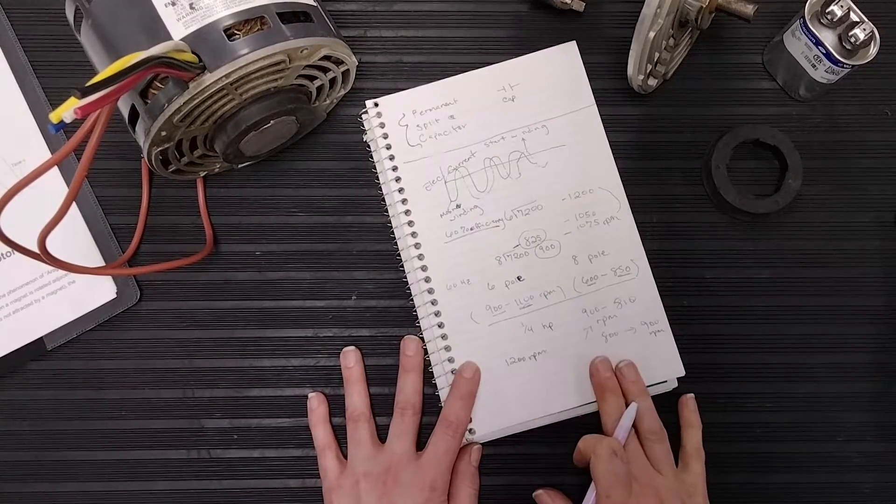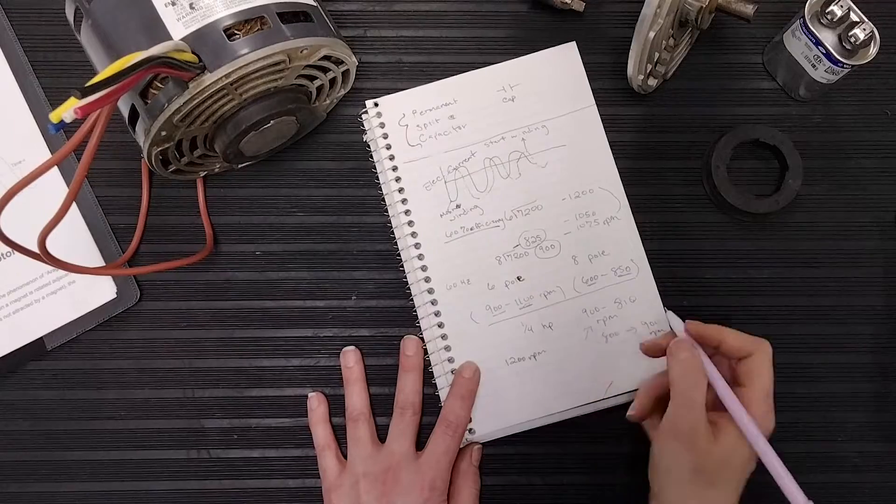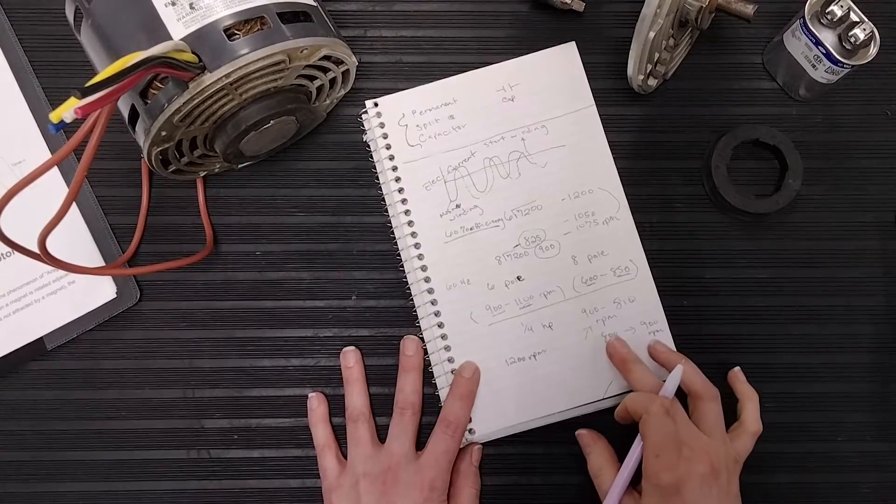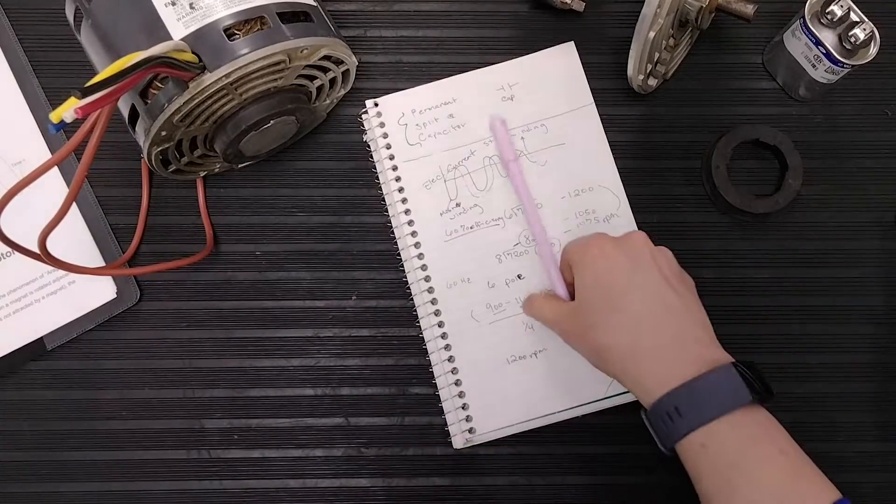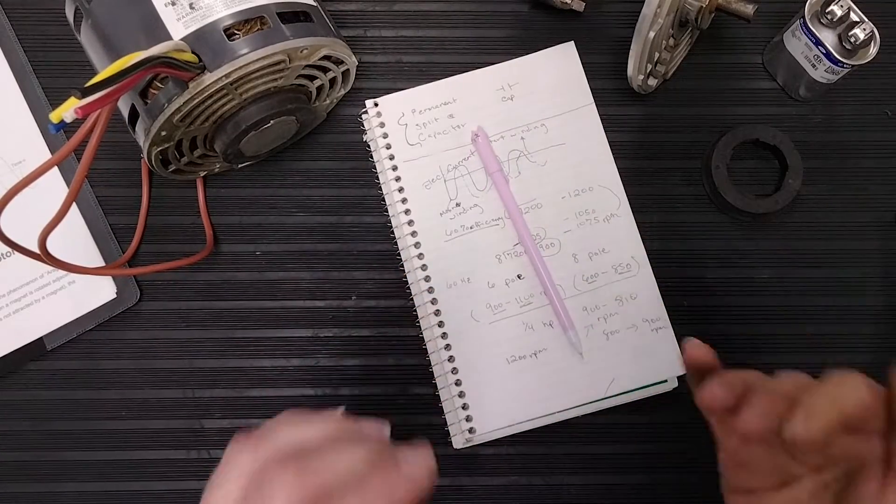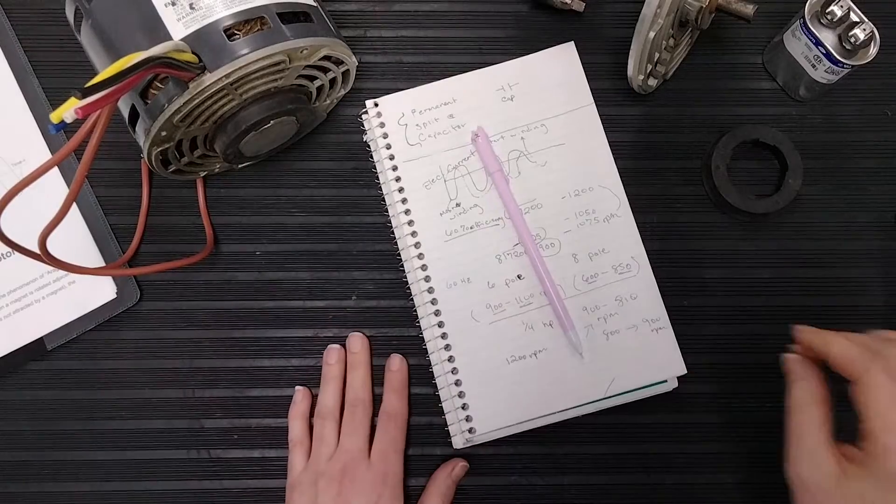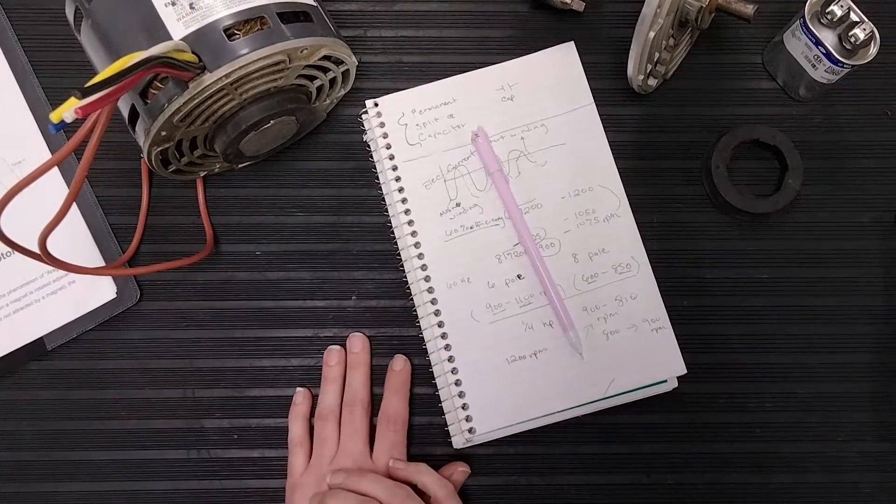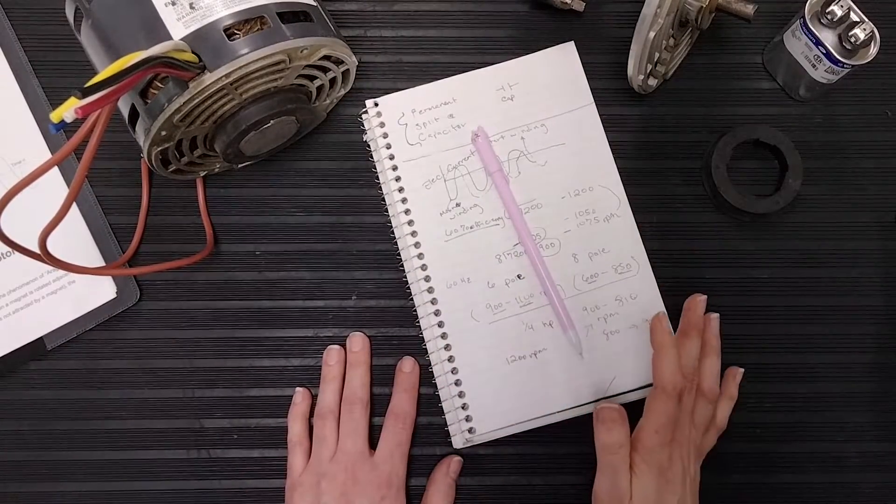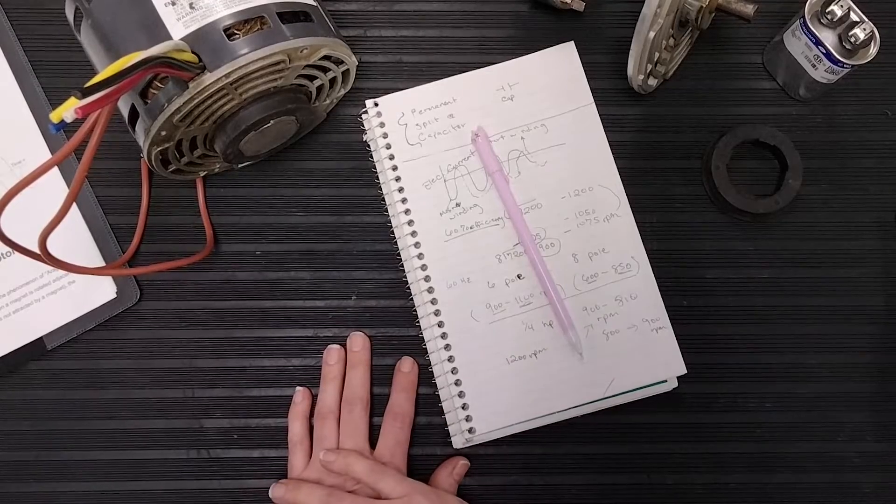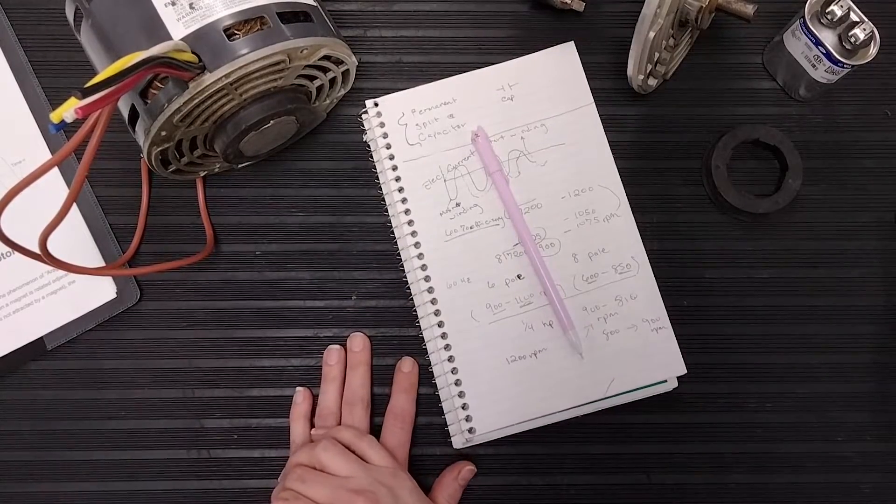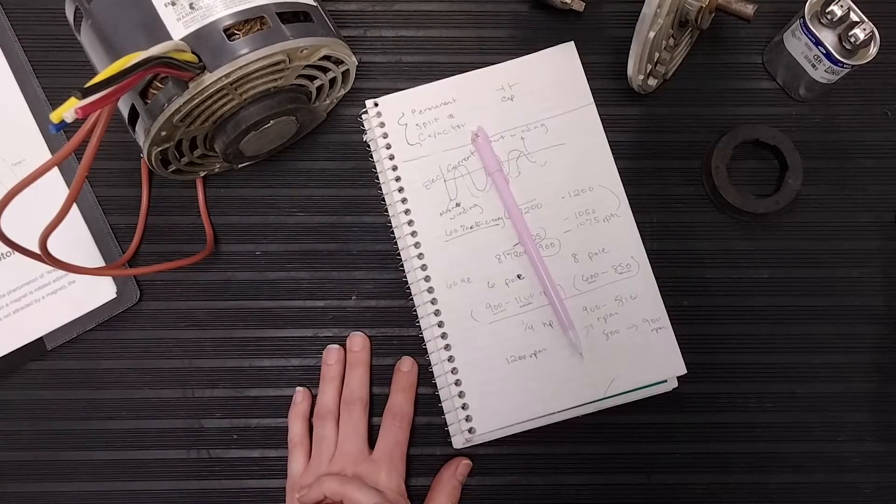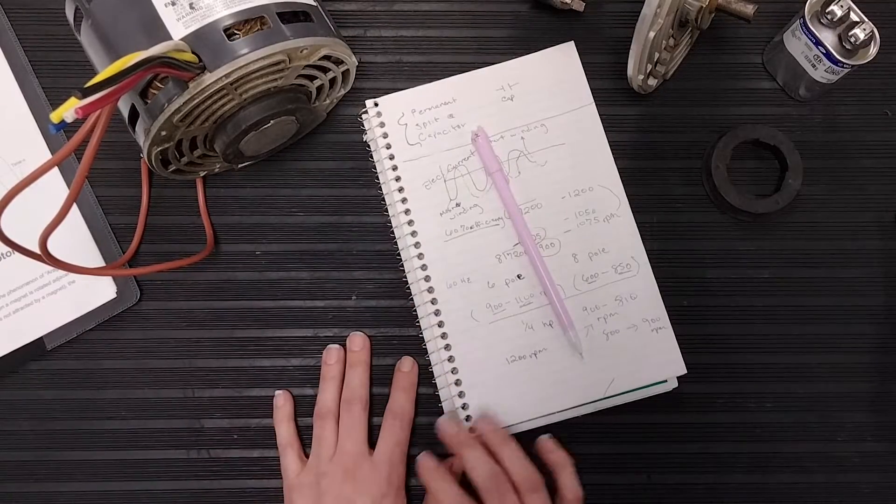Now, I've seen quite a few of the newer motors switching over to this 825 or 800 RPM. And that's because an 825 RPM motor runs a lot quieter than a 1075 RPM motor. Now, hypothetically, you could replace it that way, but then you're going to have to account for that with your fan blades.